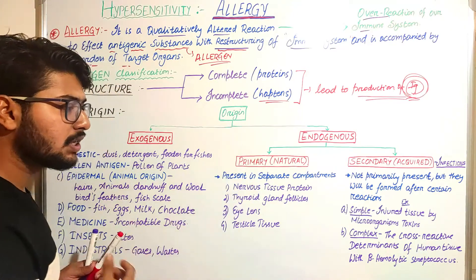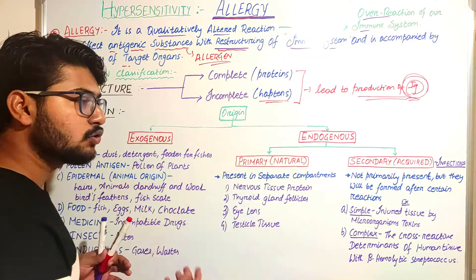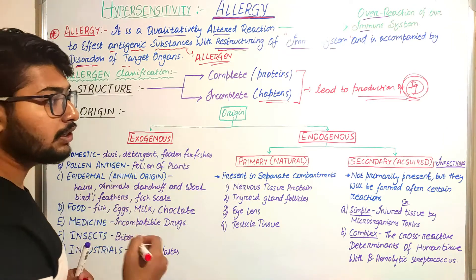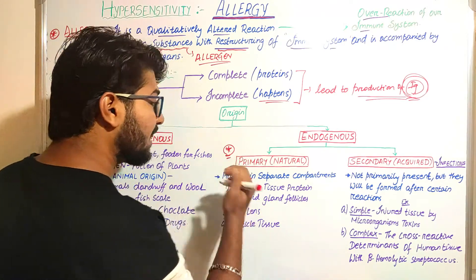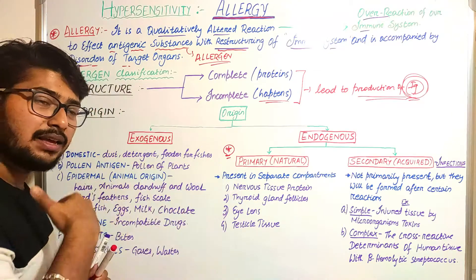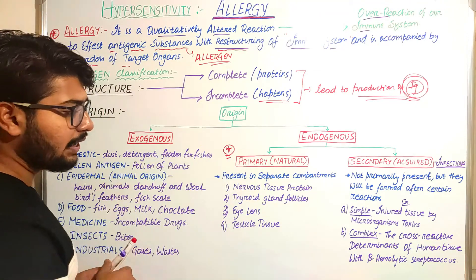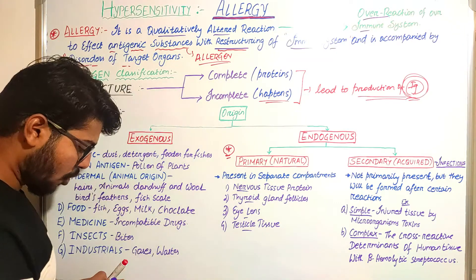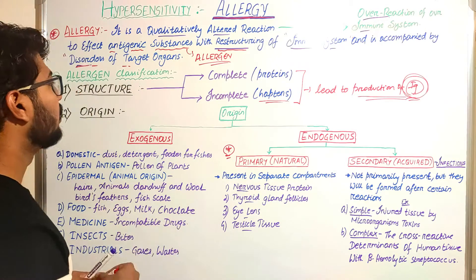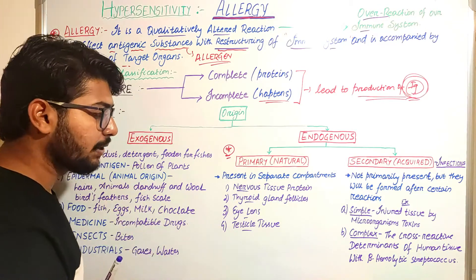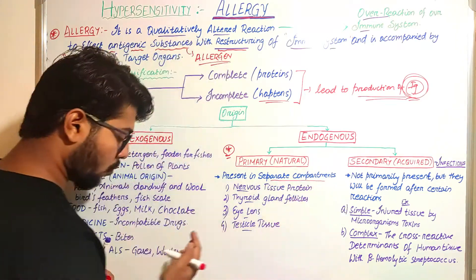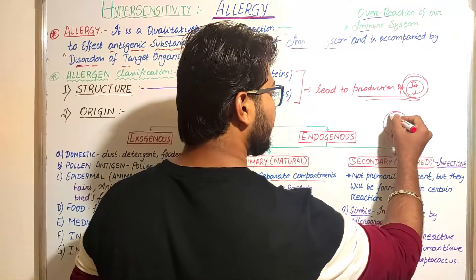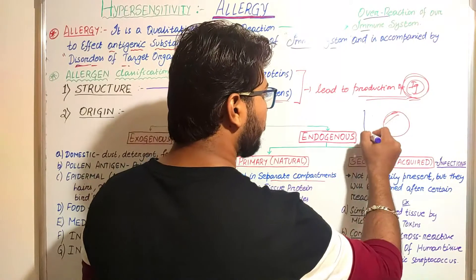The endogenous type of allergen can be primary — natural — or secondary — acquired. Primary means that from birth these are naturally present inside our body and may act as potential allergens. Examples include nervous tissue, thyroid glands, eyelids, and testicle tissues. These can cause allergy because they are present in separate compartments, isolated from the bloodstream.